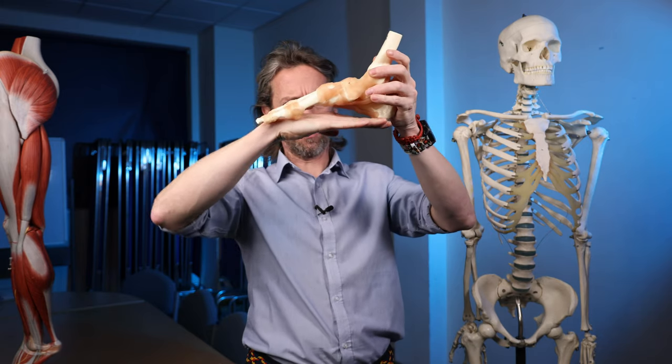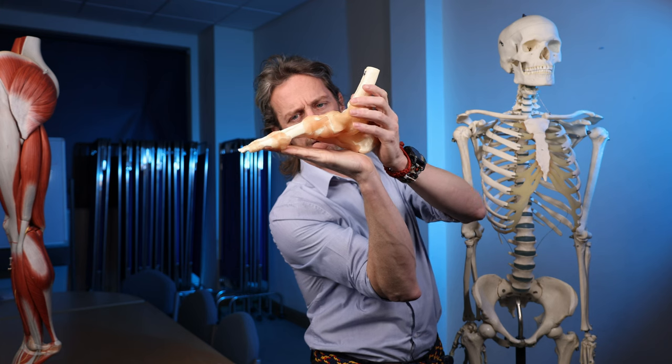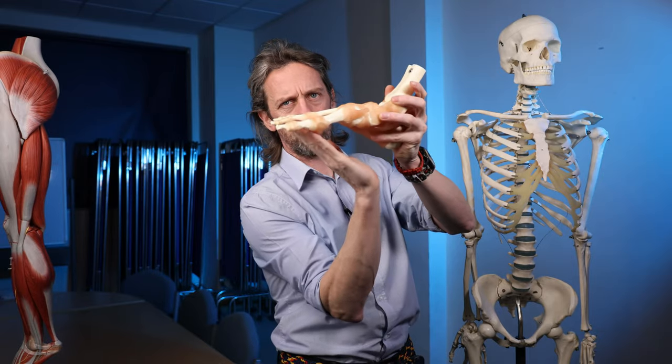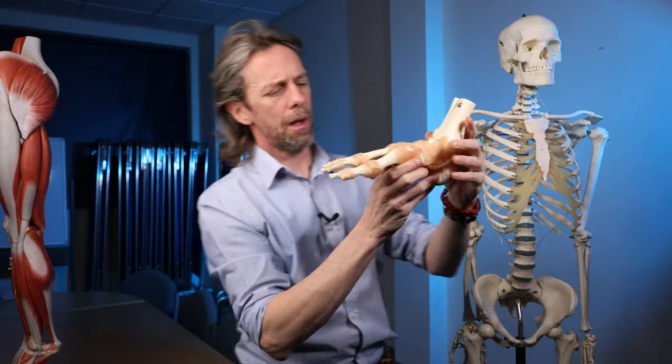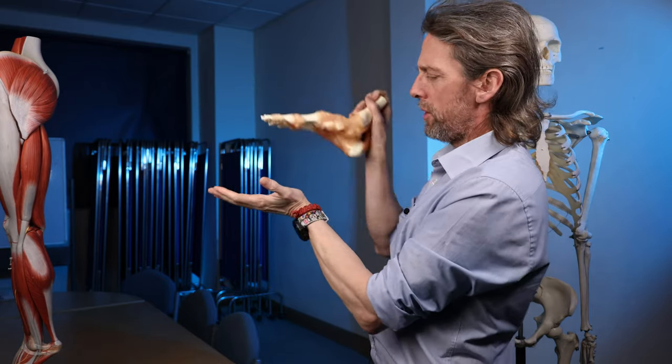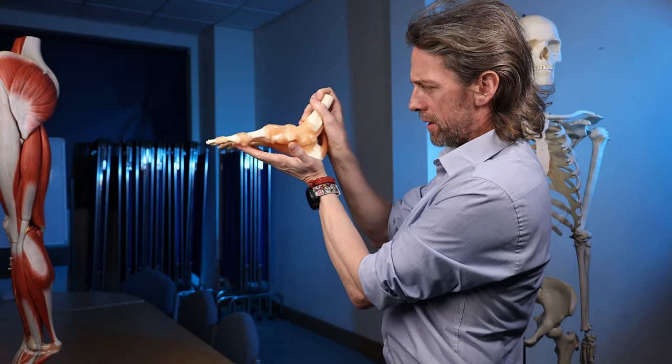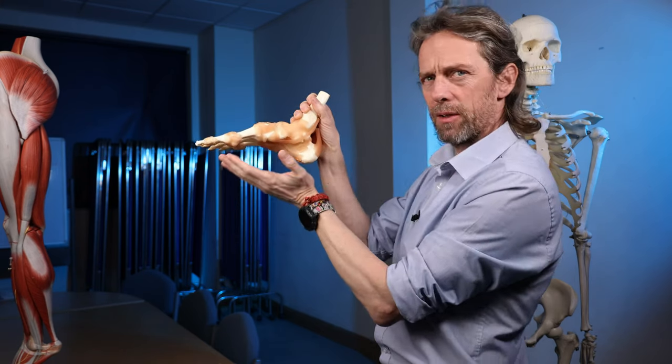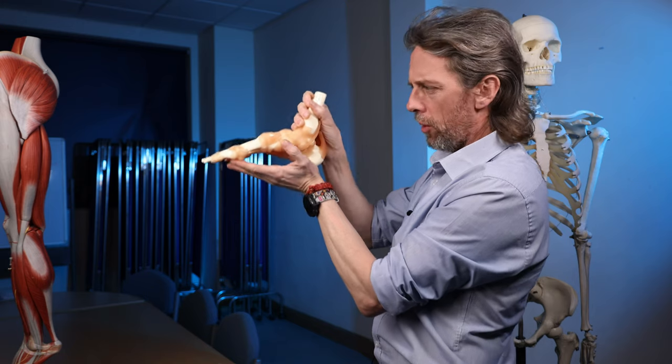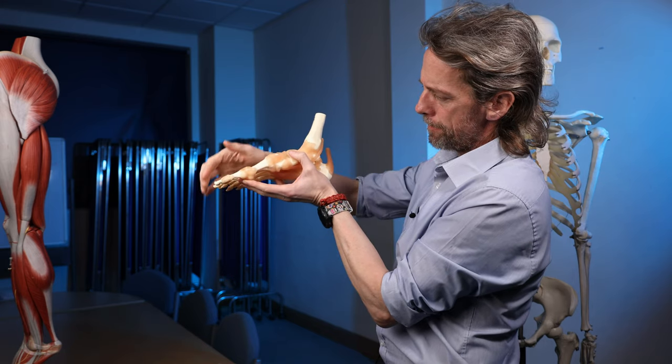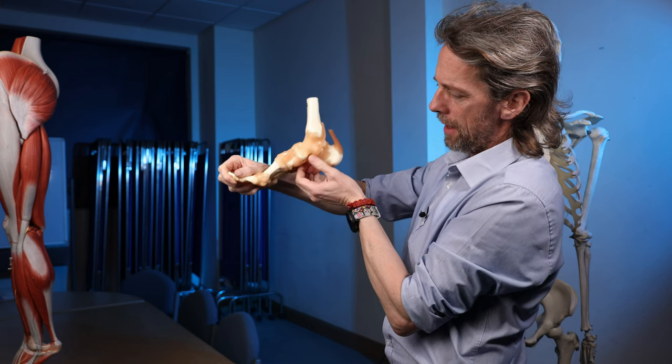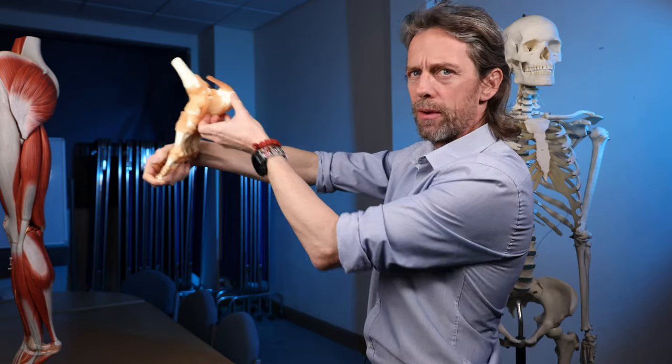And the plantar aponeurosis is helping support that longitudinal arch. And I said it also runs to the toes, so the plantar aponeurosis is somewhat stretchy. When you're walking or running and you're in the stance part—the stance part, the stance phase—and you're planting your weight on the foot, the toes then get flexed and you move onto the toes to toe off, to push off the ground.